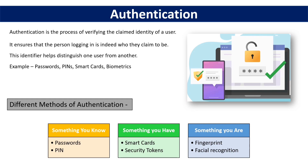Something you are refers to your physical and behavioral traits — biometrics: fingerprint recognition, facial recognition, and voice recognition. All of these come under something you are. These are the different methods of authentication, which you will keep hearing about again and again in the future as well.